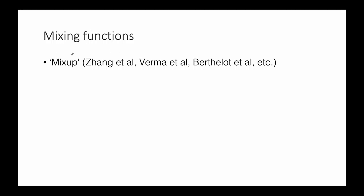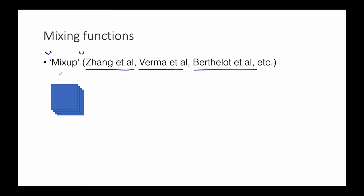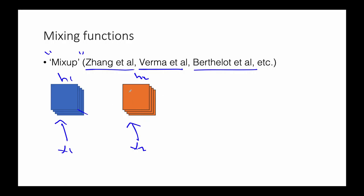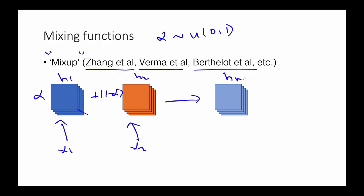What is the mixing function? The first option is standard mixup. We have H1 (an encoding of X1 as a set of feature maps) and H2 (an encoding of X2). We sample a scalar alpha from a uniform distribution and compute alpha * H1 + (1 - alpha) * H2 to get H_mix, which we decode into X_mix.